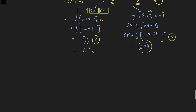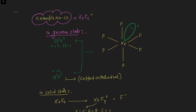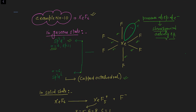Example ten: XeF6 (xenon hexafluoride) has exceptional hybridization. Some scientists argue sp3d3 (six sigma bonds and one lone pair), giving capped octahedral geometry. However, the sterochemical activity of the lone pair is debated. It is generally accepted that in gaseous state XeF6 has sp3d2 hybridization with capped octahedral geometry, because the lone pair distorts it from perfect octahedral.